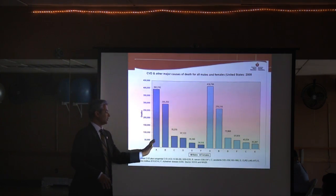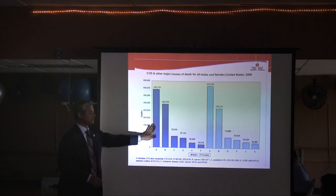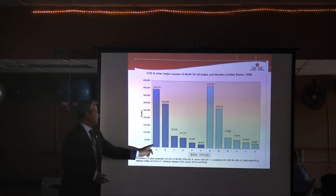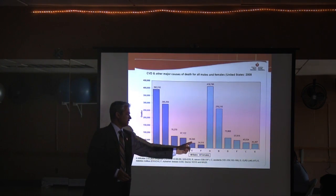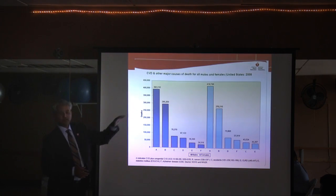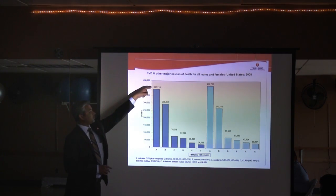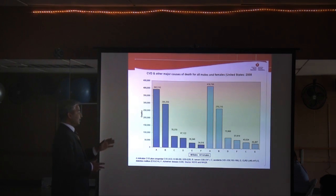Looking at causes of death: category A is all cardiovascular disease, B is all cancers combined, C is accidents, D is lung disease, E is diabetes, and F is Alzheimer's. In 2008, close to 400,000 men died of heart disease, making it the leading cause of death. Yes, it is absolutely a concern we should all be aware of.